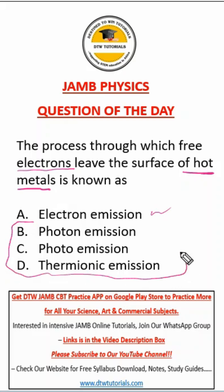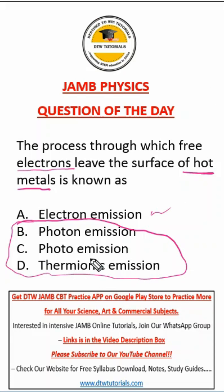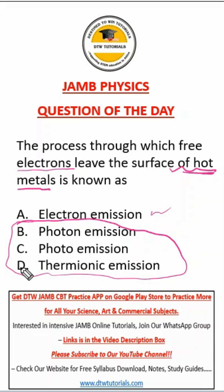There are several types of electron emission. You have photon emission, which is when electrons travel from one energy level to another. Then there is photo emission — when light hits a metal surface and electrons are emitted. And thermionic emission is when electrons escape the surface of a hot metal.